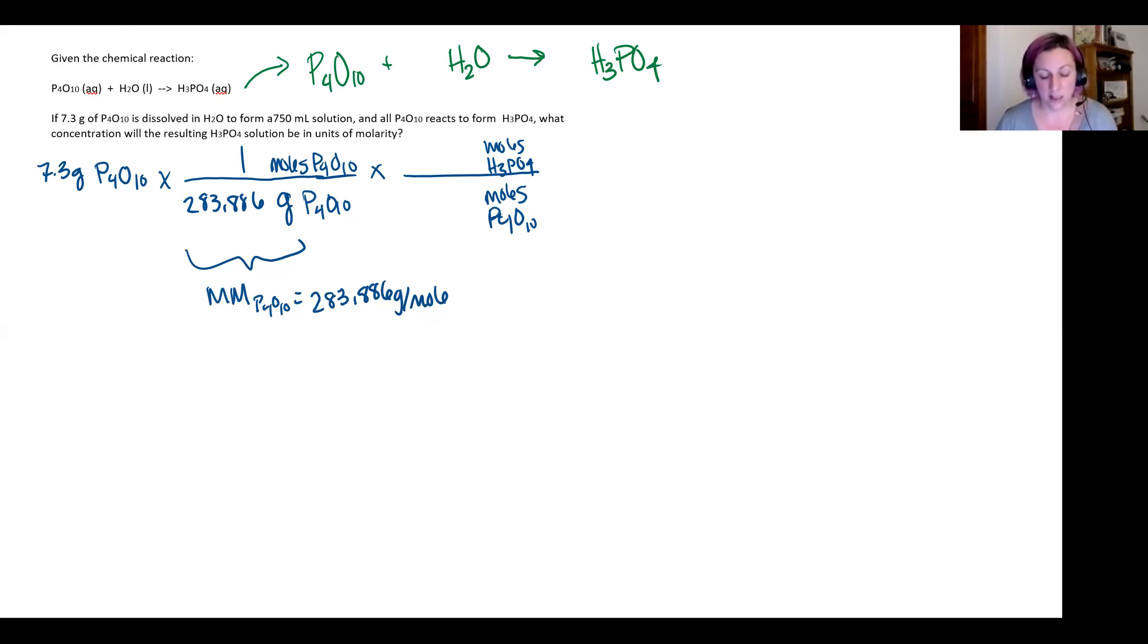I'm going to start with phosphorus because it's the heaviest element. Looking at phosphorus, I have four on my reactant side and only one on my product side. So I'm going to put a four in front of my product. Now my phosphorus is balanced.